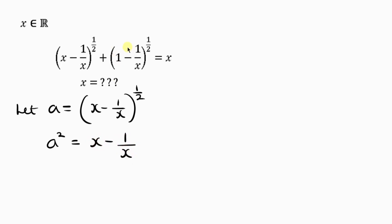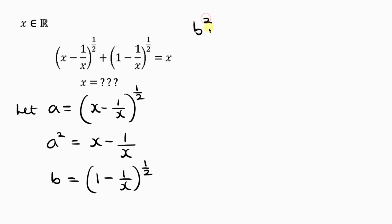Now I'm going to do the same thing to the other expression. Let b be equal to the second expression, which is 1 minus 1 over x to the power of half. Let's remove this power of half by taking the square of both sides. So b squared equals 1 minus 1 all over x.